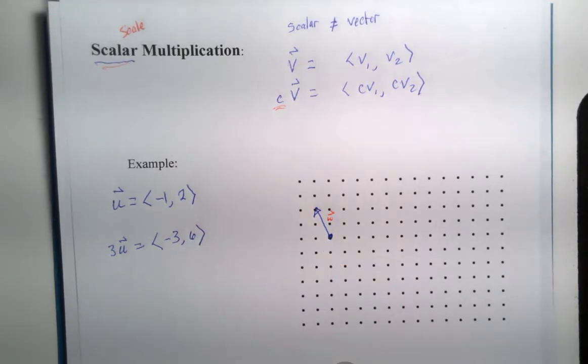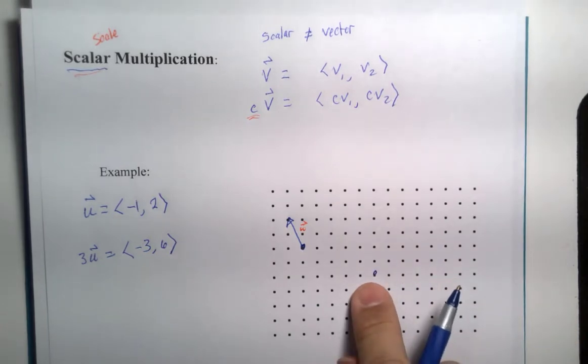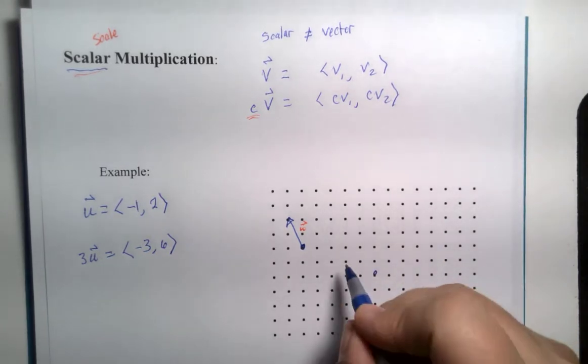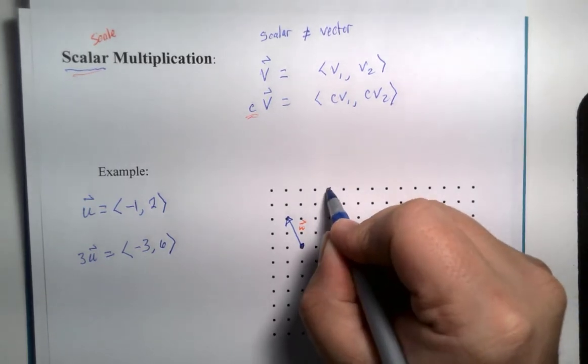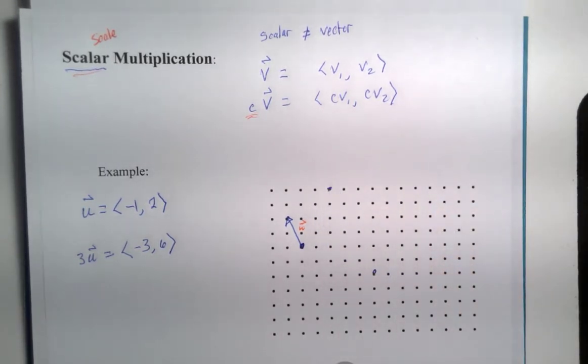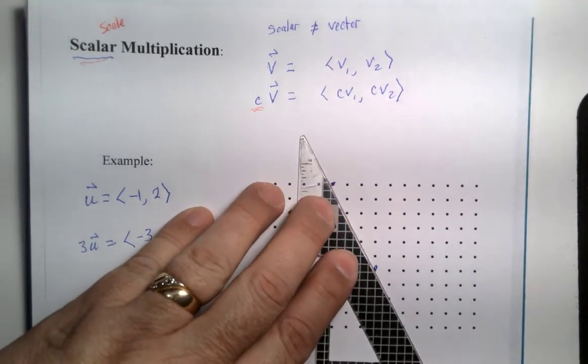And if we can visually look at that vector: one, two, three. One, two, three, four, five, six. I don't trust my drawing quite yet.